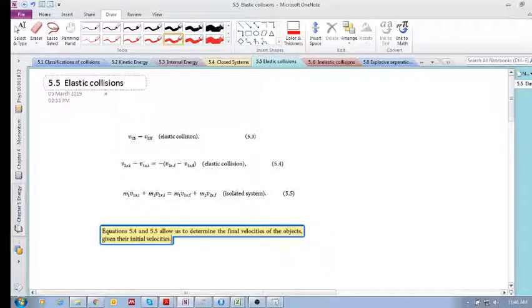So 5.5, we're going to look at elastic collisions. Now we have looked at this over and over again in this chapter, so we already know all of this. The first thing is that the initial relative speed is the same as the final relative speed in an elastic collision.